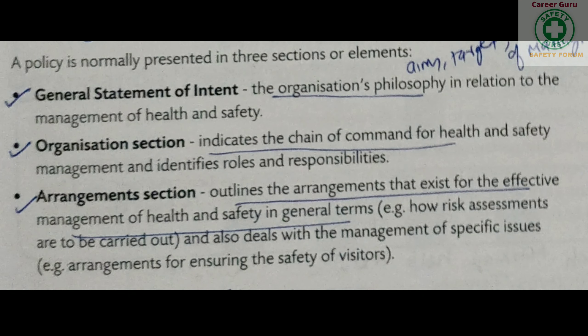Welcome to this new video. In today's section we will see what are the three elements of setting up a policy — the three elements you have to consider when you set up a health and safety policy. A policy is normally presented in three sections or elements: general statement of intent, organization section, and arrangements section.